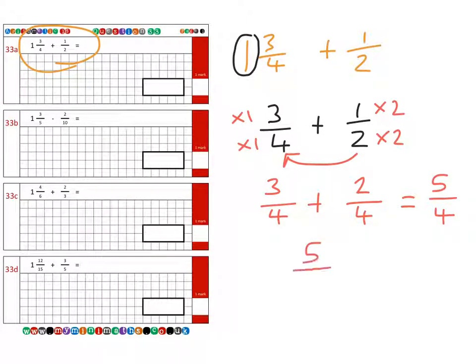Now, 5 over 4 is an improper fraction, or a top-heavy fraction, and it's the same as saying 1 and 1 quarter. When I add that together with the original 1 up here, I finish with 2 and 1 quarter for the final answer.